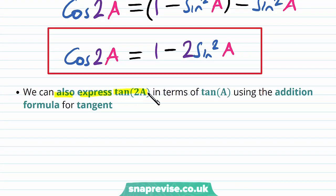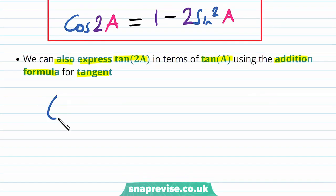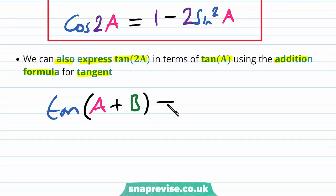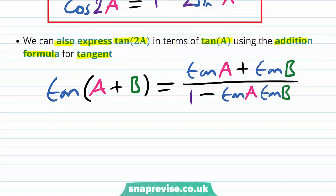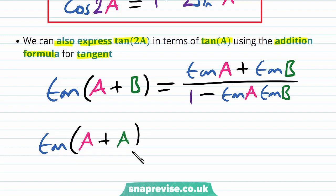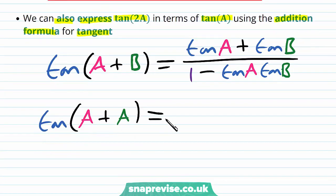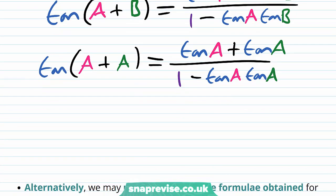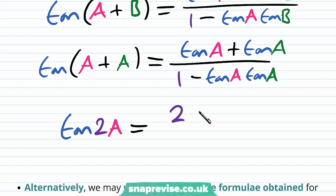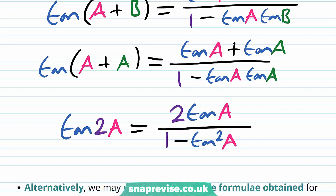We can also express tan of 2a in terms of tan of a using the addition formula for tangent. Recall that tan of a plus b equals tan a plus tan b divided by 1 minus tan a tan b. Letting b equal a, we have tan of a plus a on the left, and the right hand side becomes tan a plus tan a divided by 1 minus tan a tan a. Simplifying, tan of 2a equals 2 tan a divided by 1 minus tan squared of a.